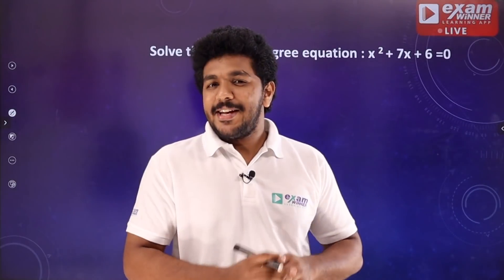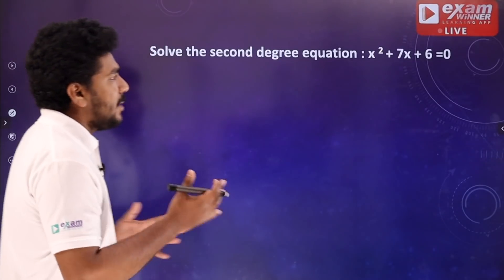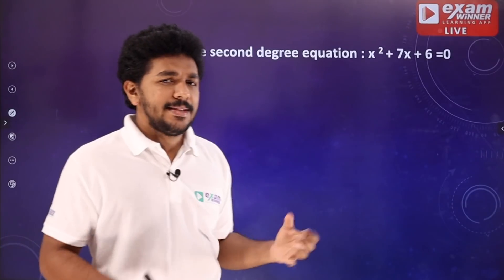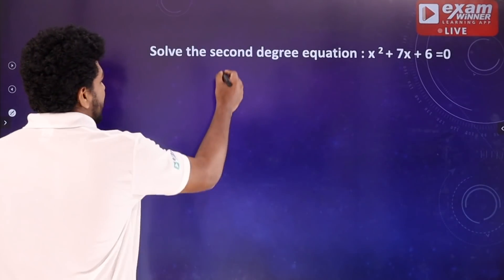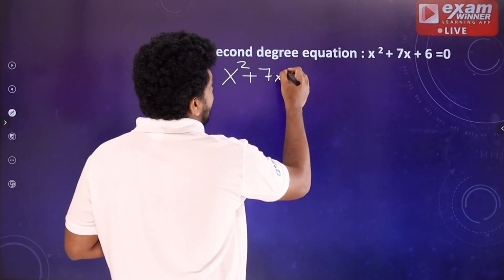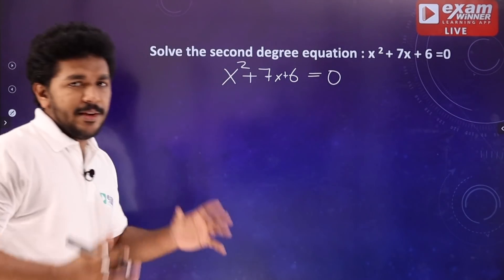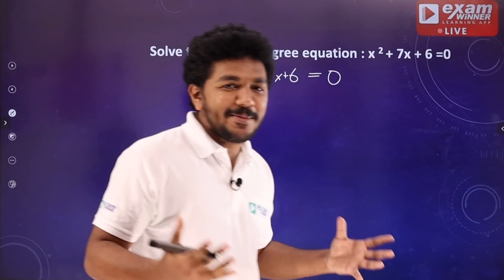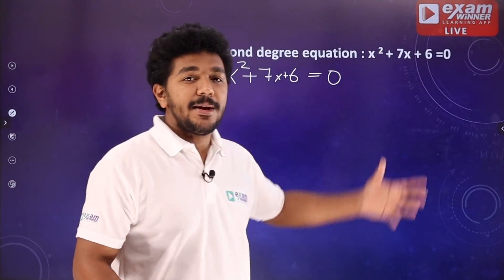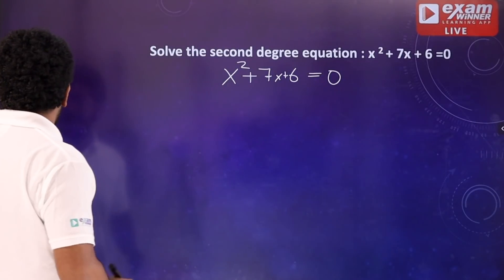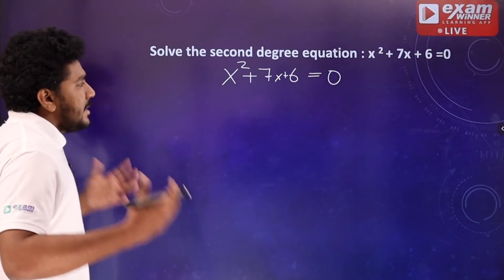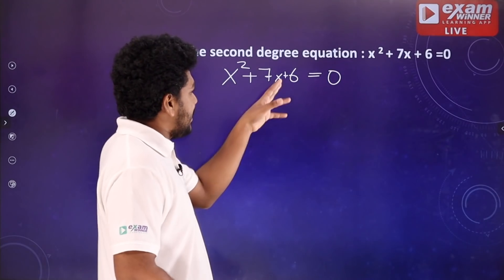Let's try a more difficult question: solve the second degree equation x² plus 7x plus 6 equals zero. We use the same method — the complete the square method, completion of the square method. We use x² plus 7x plus 6 and separate the number part.